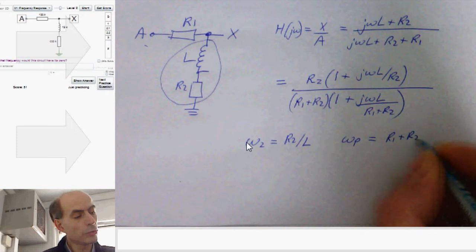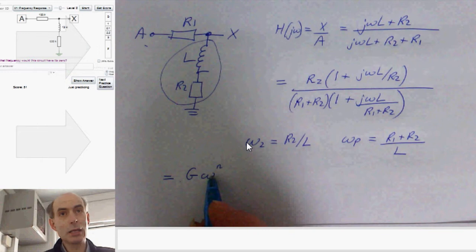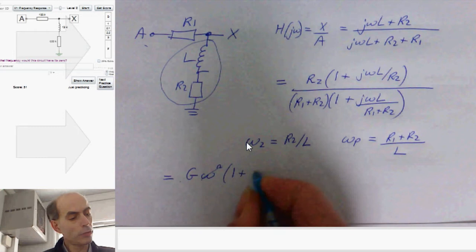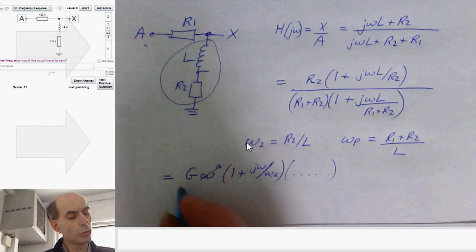Since we're trying to get it into the standard format of gain, times omega to the power of n, if we have any omegas at 0 Hz, which here we don't, times 1 plus J omega over omega Z, where that's the frequency of the zero. And if there are other zeros, then we'll have more terms up there.